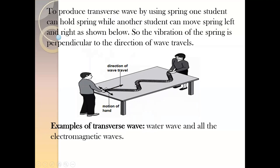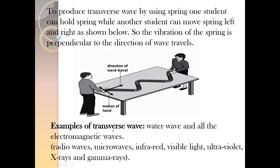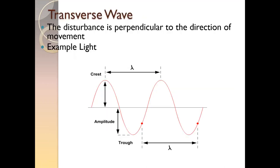Examples of transverse waves include water waves and all electromagnetic waves. Electromagnetic waves are waves that can travel through a vacuum and do not require a medium — such as radio waves, microwaves, infrared, visible light, ultraviolet, X-rays, and gamma rays. All electromagnetic waves are transverse in nature, meaning the vibration is perpendicular to the direction of the wave.